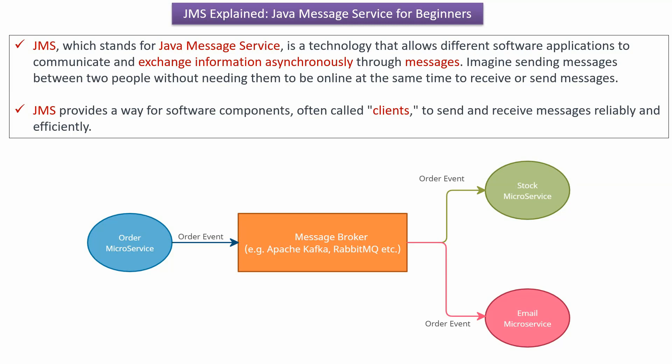It is like sending messages between two people without needing them to be online at the same time to receive or send messages. JMS provides a way for software components, often called clients, to send and receive messages reliably and efficiently.